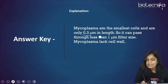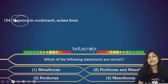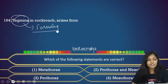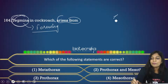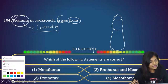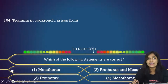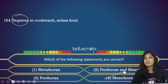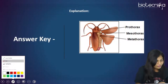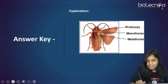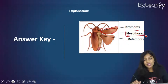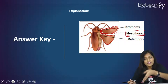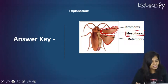Question 164: Tegmina (the four wings of a cockroach) — from which thoracic segment do they arise? The options are prothorax, mesothorax, or metathorax. The four wings (tegmina) arise from the mesothorax region. They are not hind wings. The answer is option 4: mesothorax.